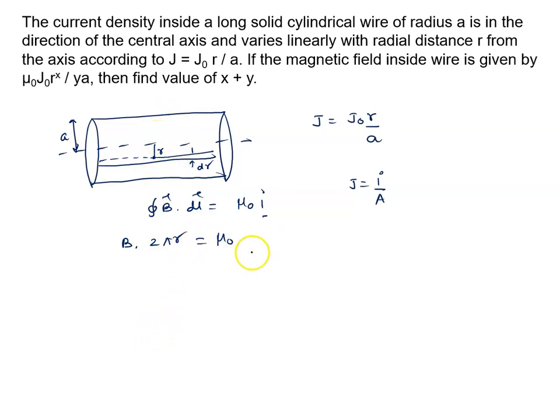Equal to μ₀, current density into area. Current density at r distance is given by J₀r upon a. And what is the area of this elemental part? We all know it is given by 2πr into dr.